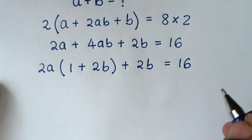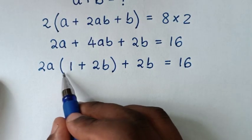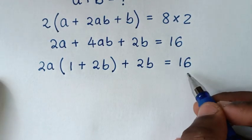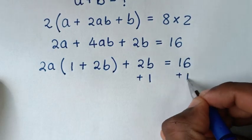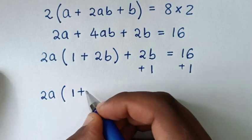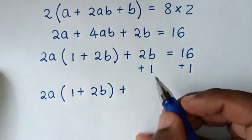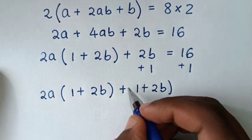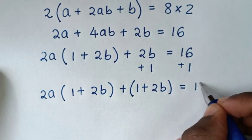In the next step, we want to make 1 plus 2b a common factor. Here we have 2b, so we will add 1 to both sides. Then it will be 2a bracket 1 plus 2b bracket, plus 1 plus 2b, is equal to 16 plus 1, which is 17.